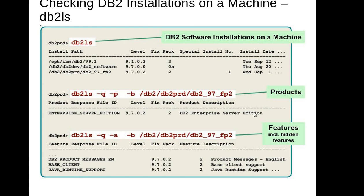There are certain hidden features which are inclusive of your base installation. In case you are interested to know what hidden features are installed along with your base installation, you can run this command 'q-q-a'. This command is used to list your software location and identify the edition installed.